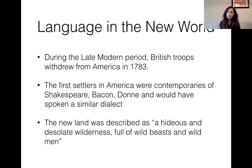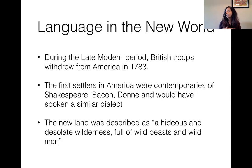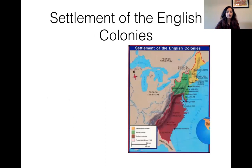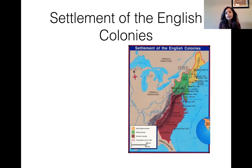They described America as a hideous and desolate wilderness full of wild beasts and wild men — and I'm quoting them, so it's not an exaggeration; you can actually see this in books. The kind of languages and people they encountered were very different from what they were exposed to in Europe. Here is a map of the settlement of the English colonies. They came to the east coast of America, as that's what is closer to England when you sail from England.